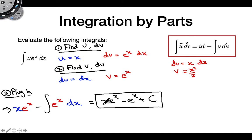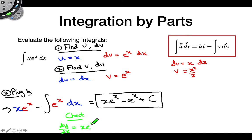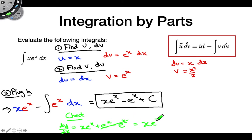That's our final answer. We can even check this: taking the derivative, we use the product rule on x·e^x, giving x·e^x plus e^x, then subtract the derivative of e^x, which is e^x, and the derivative of c is 0. Those cancel, leaving just x·e^x — exactly what we started with. So we know that's correct.